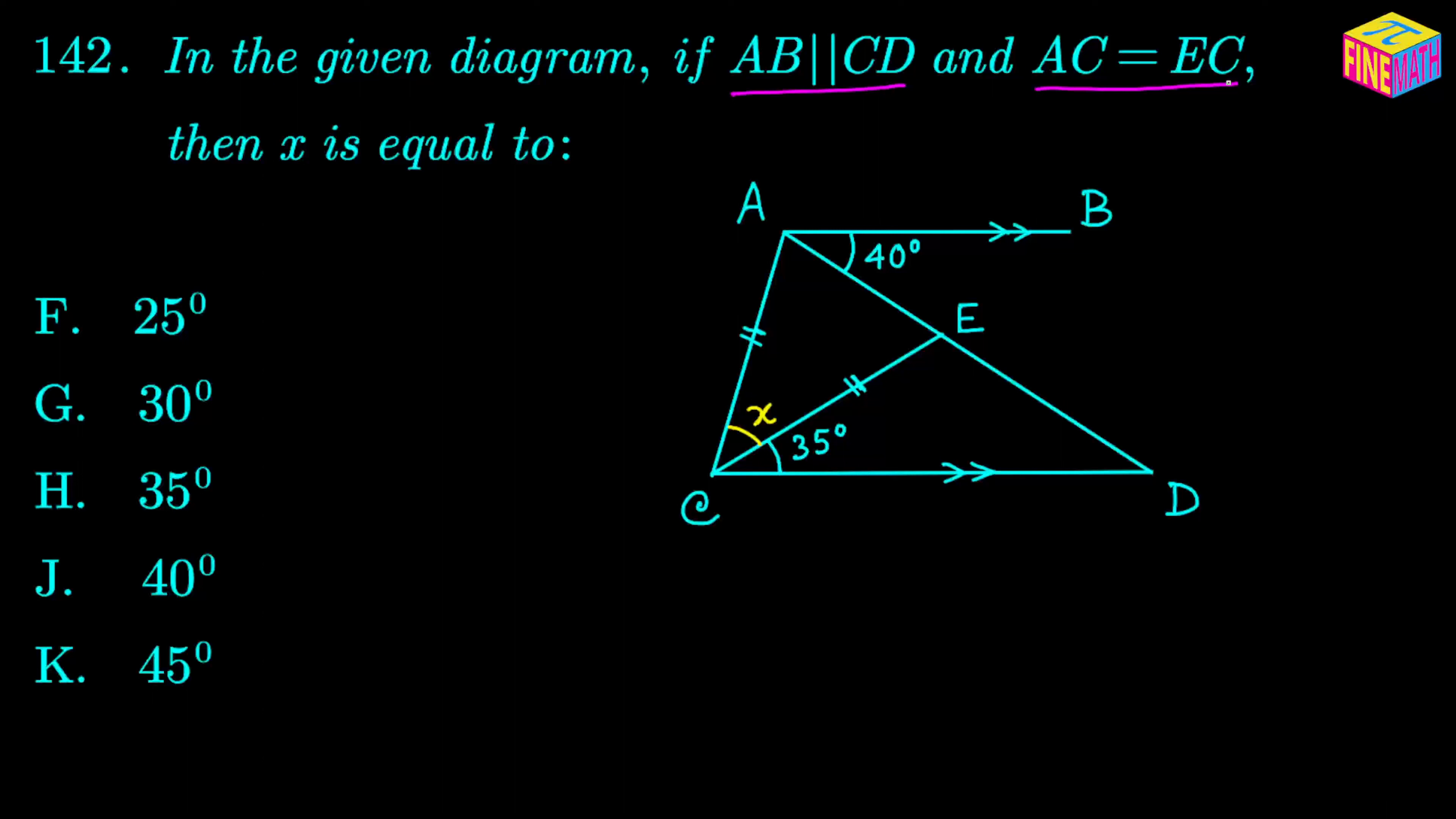Now because AB and CD are parallel, if you consider AD to be a transversal, then the alternate angle of this 40 degree would be right here. So this will be that alternate angle right here and this is also going to be 40 degrees.